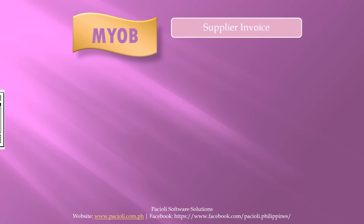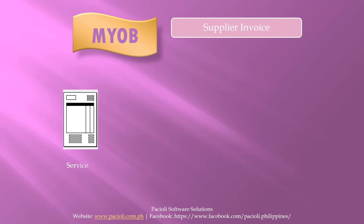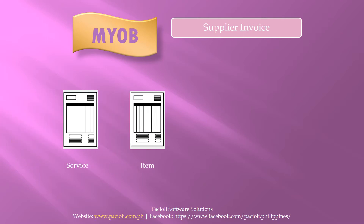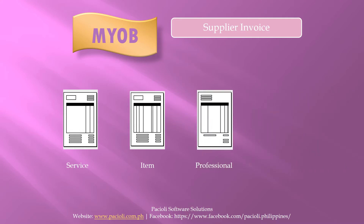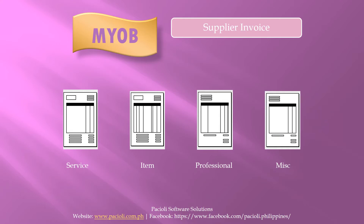The first option is Service, and this layout is used by businesses who purchase services. The second option is Item, used by businesses who purchase products for resale. If you need to specify quantities and unit price, this would be the best layout to use. The third option is Professional, used by businesses who purchase professional services and need to include the date of the service provided. The final option is Miscellaneous Layout, used to make adjustments to purchases. For this video, we will be using the Service layout.